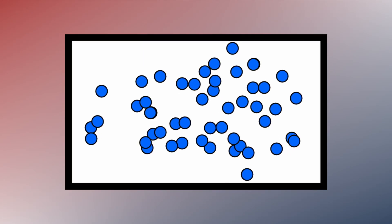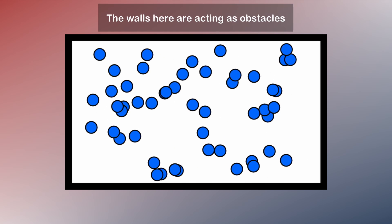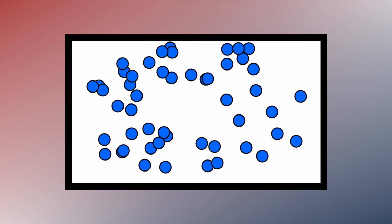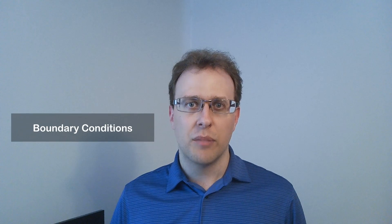To solve Fick's laws of diffusion and get a channel impulse response, we need to describe the physical environment where the diffusion is taking place. We need to know the boundaries of the environment, so any obstacles that molecules could hit and what happens when they do, and we need to know any locations where molecules get added to the system or taken away.